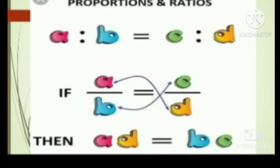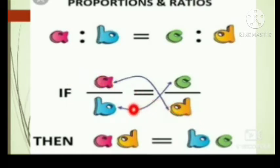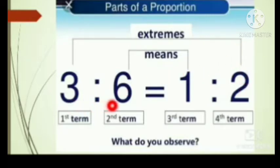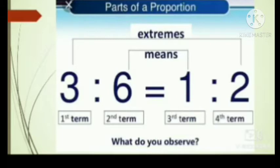Let's see with an example. A is to B is in the form of ratio, C is to D is in the form of ratio. By using the cross product of proportion, A into D equals B into C, that is AD equals BC. Now let's see the parts of proportion. The inner parts — 6 and 1 — are called means. The outer parts — 3 and 2 — are called extremes. 3 is the first term, 6 is the second term, 1 is the third term, 2 is the fourth term. If the product of extremes and means are equal, the given ratios are in proportion. If not equal, the given ratios are not in proportion.